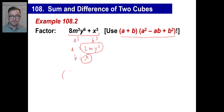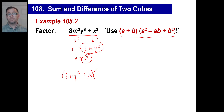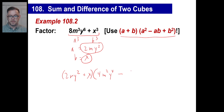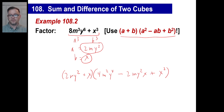So a is 2my² and b is x. Let's write it out: (a + b) gives us (2my² + x). A squared is 2my² times 2my², so 2 × 2 = 4, m × m = m², and y² × y² = y⁴. Minus a times b gives us 2my² times x. Plus b squared, which is x squared. And that's how you do it. If you multiply it all out, you'd confirm this is correct and everything would cancel.